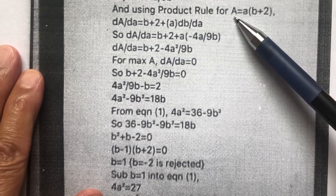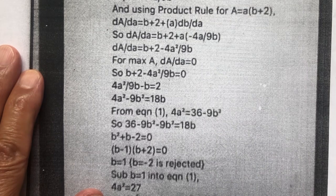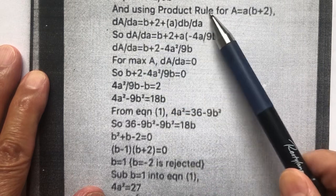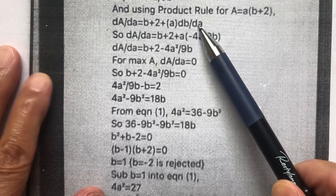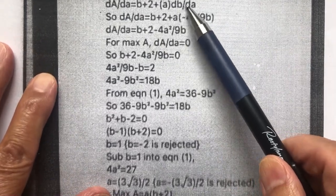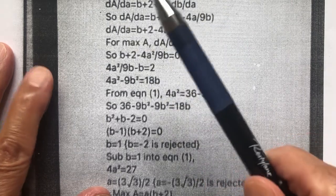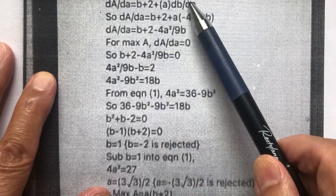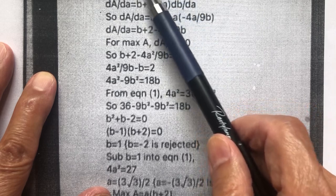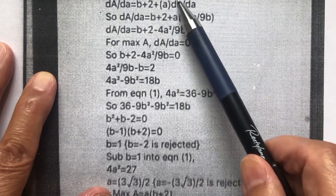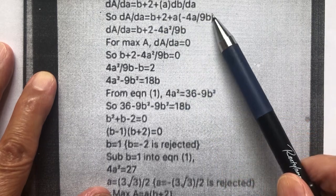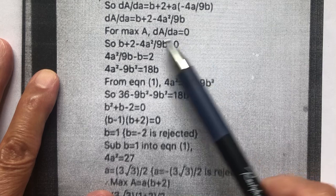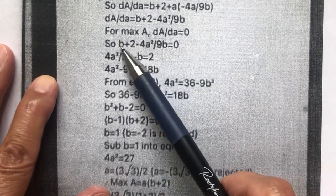I want maximum area. Therefore, the derivative has to be equal to 0. So let's do the derivative using product rule. This is a product. And isolate db/da. The derivative dA/da is this. But db/da is already worked out. It's this fraction. Substitute this fraction into db/da. I get this. Simplify it. And the derivative has to be 0 because I want maximum A.